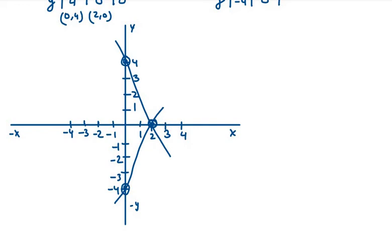First we need to write the vertices. The vertices are 0, 4, then 2, 0, then we have 0, minus 4. So these are my vertices. Three vertices are there.